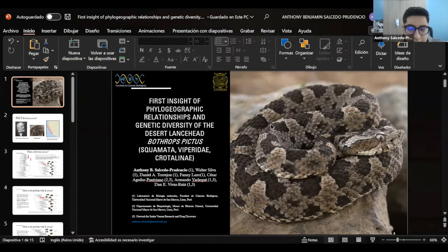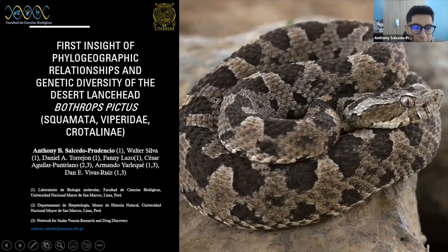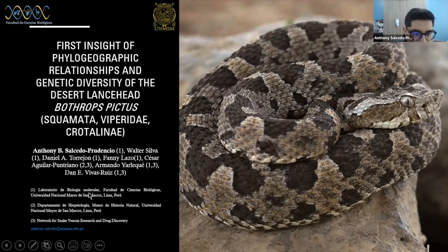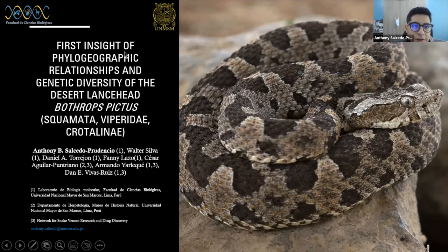Good afternoon everyone, and thank you to the organizers for allowing me to be here. My name is Anthony Salcedo Prudenzio. I belong to the Molecular Biology Laboratory at National University of San Marcos in Lima, Peru. Today I'm going to be talking about our latest project, titled 'Phylogeographic Relationships and Genetic Diversity of the Desert Lancehead Bothrops pictus.'